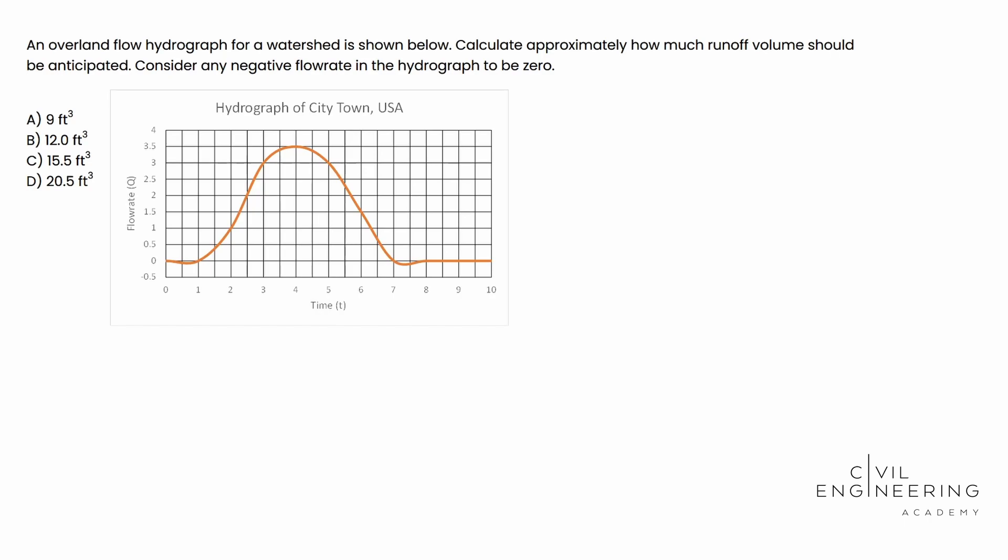So here's what the question says. An overland flow hydrograph for a watershed is shown below. Calculate approximately how much runoff volume should be anticipated. Consider any negative flow rate in the hydrograph to be zero. And then we see our chart and our four options available to us in cubic feet.